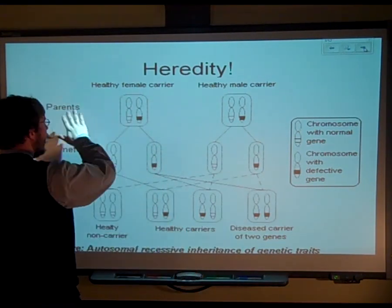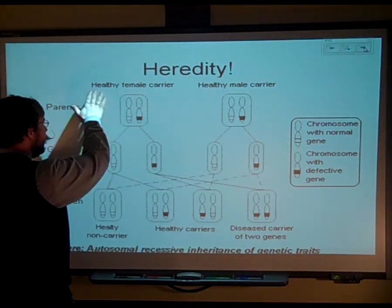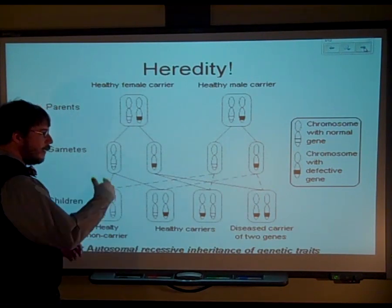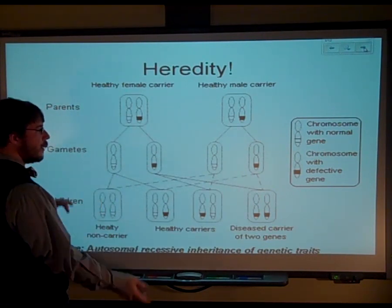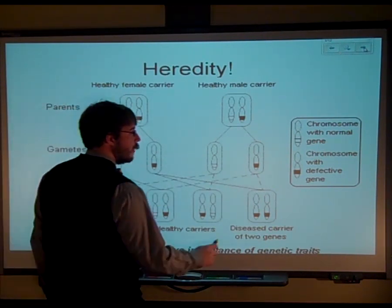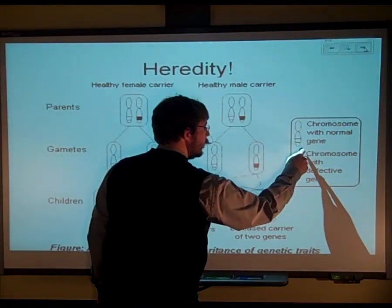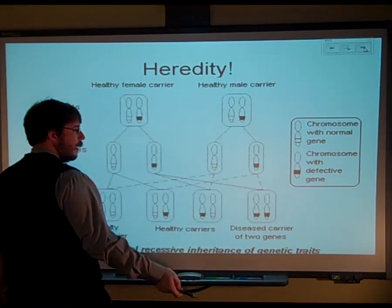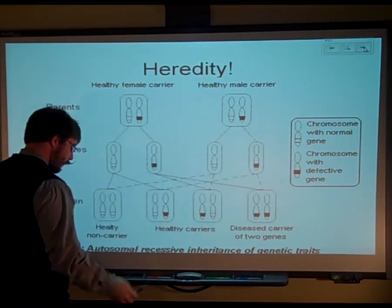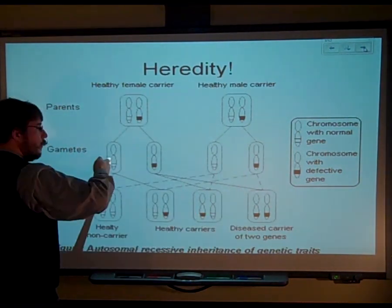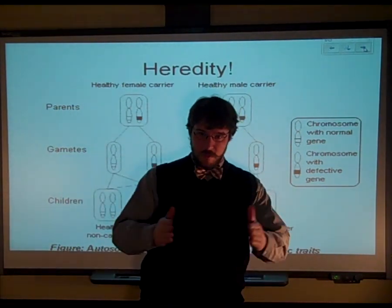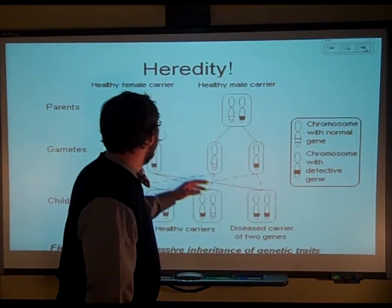Here we have a little diagram representing the parents, and let's say there's some kind of defective gene. This is what the normal gene would look like, and here's the defective gene. When we make the gametes — that's meiosis — those chromosomes are split apart.